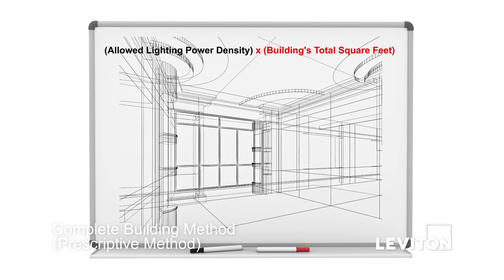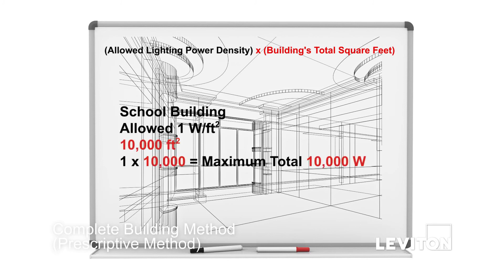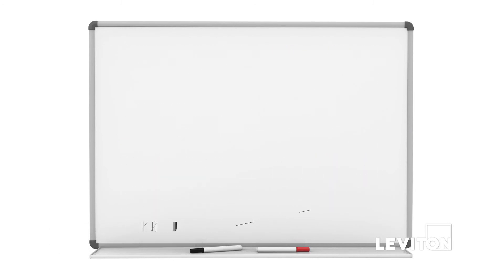If the design is a school building, you are allowed one watt per square foot. So if you have a 10,000 square foot building, you are allowed a maximum total of 10,000 watts of lighting across the entire building.